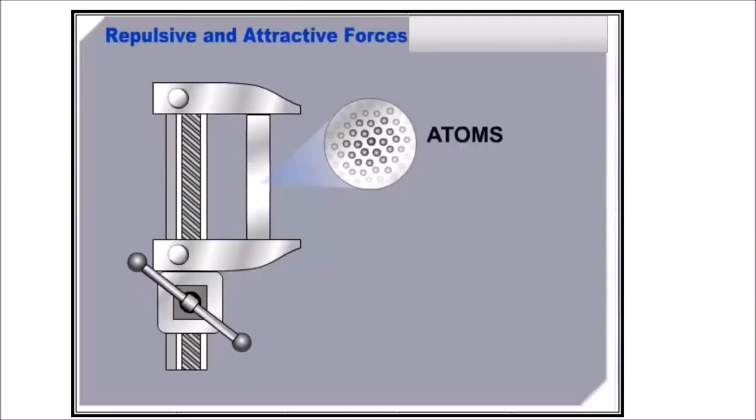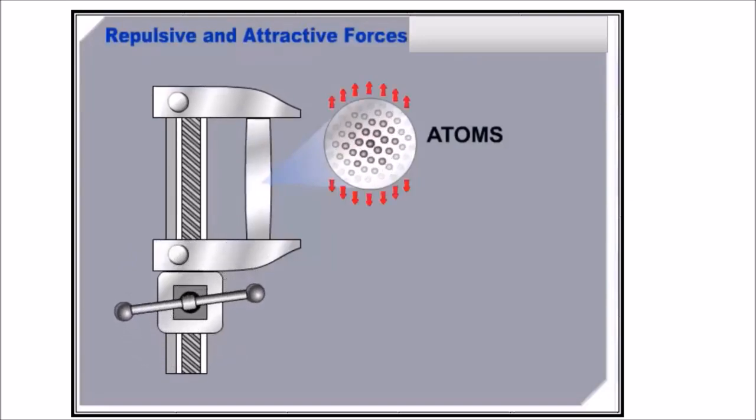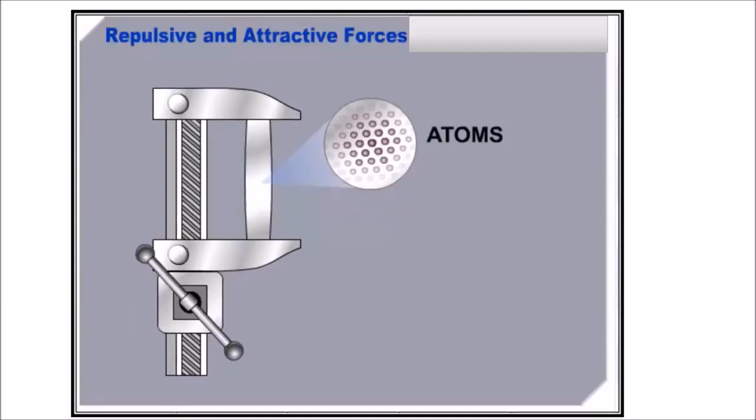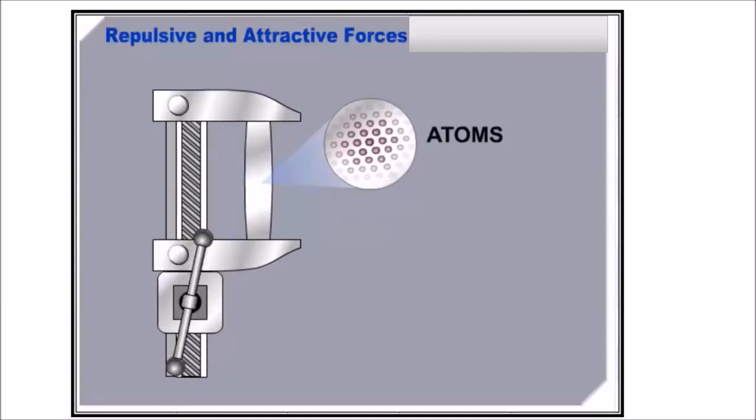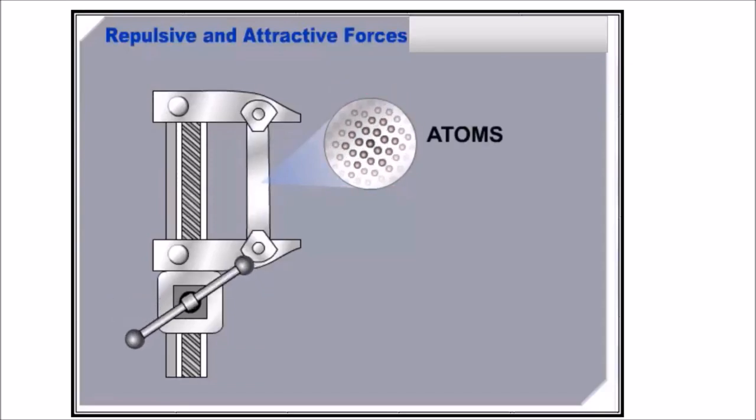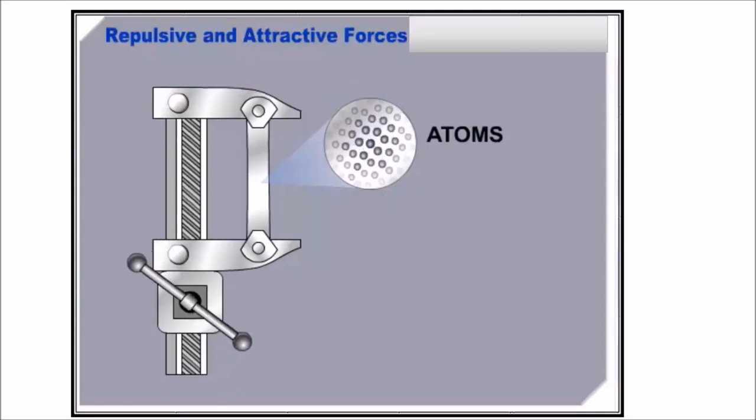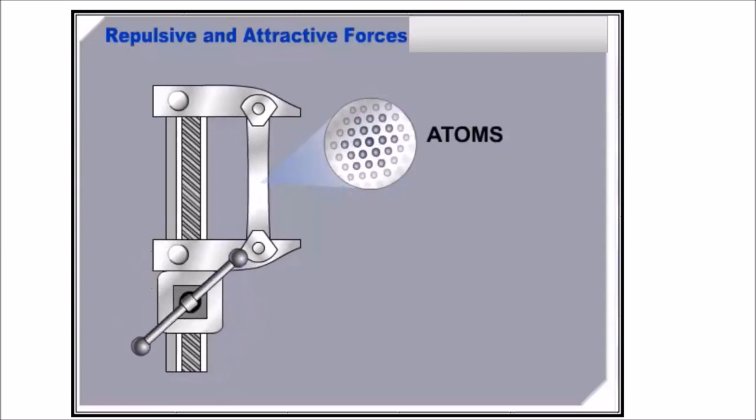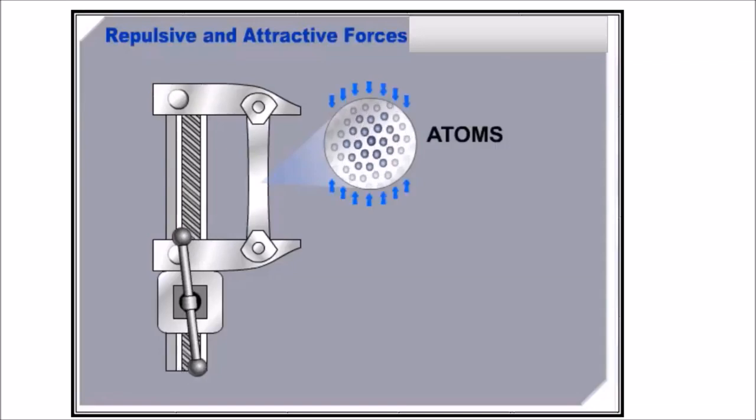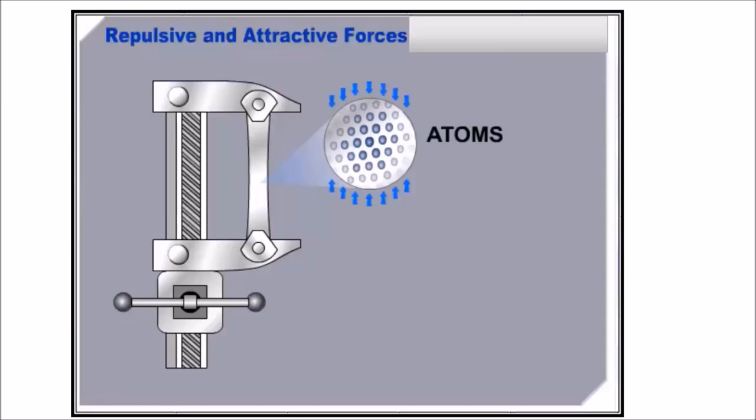Any attempt to force the atoms closer together will be counteracted by repulsive forces which increase as the atoms are pushed closer together. This behavior is evidenced by the fact that metals exhibit extremely high compressive strengths. Similarly, any attempt to pull the atoms further apart will result in a counteracting attractive force. These attractive forces, however, tend to decrease as the atoms are pulled further apart.